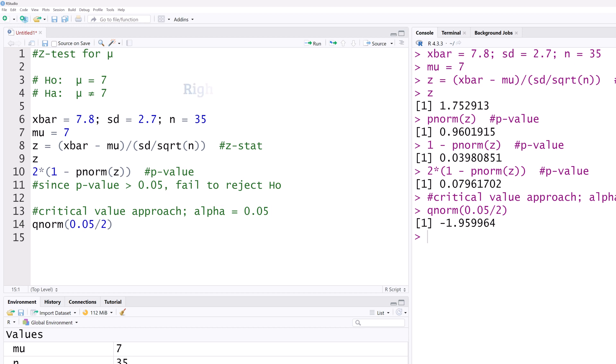Next, suppose this were a right tailed or upper tailed test, where the alternative hypothesis is mu greater than 7. The test statistic will be the same, but the P value will only be in the right tail, and not multiplied by 2. On running that, we obtain a P value of 0.0398 for the upper tailed test.